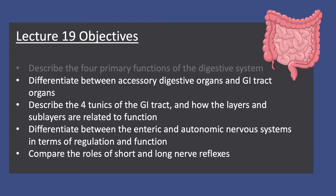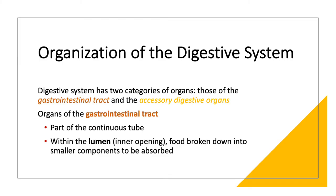We'll now differentiate between accessory digestive organs and GI tract organs. The GI tract was one of the two parts of the digestive system; the other is the accessory digestive organs that help the GI tract with digestion. The GI tract organs form that tube from mouth to anus, with a lumen where food is broken down and absorbed. Ingested materials don't become part of the body until they're absorbed. Accessory digestive organs are not part of that tube but aid in the breakdown of food.